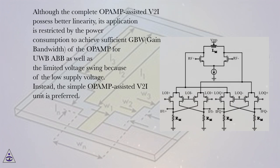Although the complete op-amp-assisted V2I possess better linearity, its application is restricted by the power consumption to achieve sufficient GBW gain bandwidth of the op-amp for UWB ABB as well as the limited voltage swing because of the low supply voltage. Instead, the simple op-amp-assisted V2I unit is preferred.